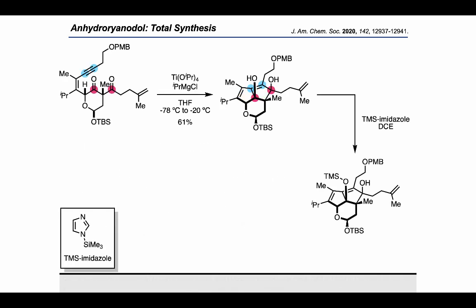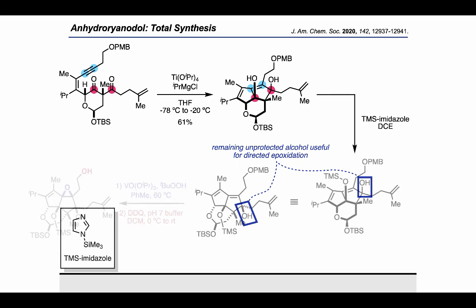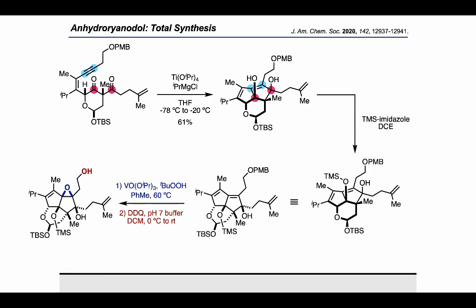Moving forward, the authors carried out a single TMS protection using TMS imidazole to yield a product, which is redrawn to make the next step easier to see. An important virtue of this step is that the remaining unprotected alcohol can be used in a subsequent directed epoxidation. They followed up by performing that directed epoxidation with vanadyl isopropoxide and tert-butyl hydroperoxide, and additionally removed the PMB group using DDQ.